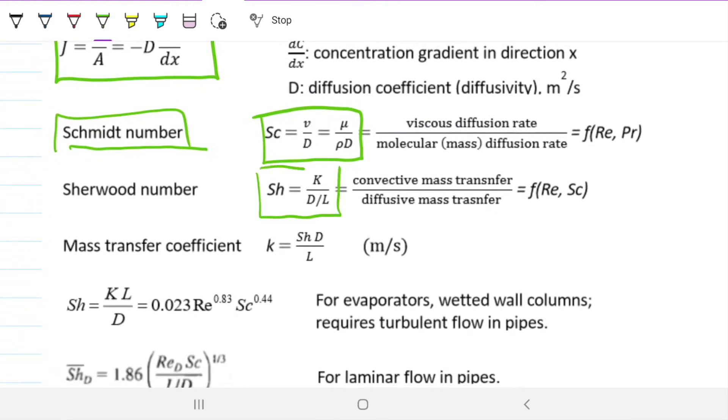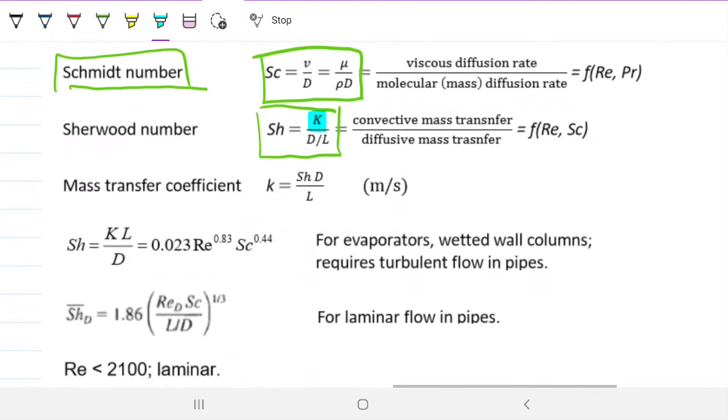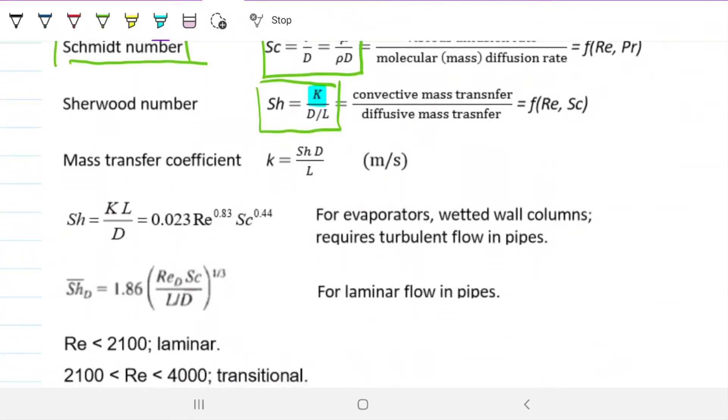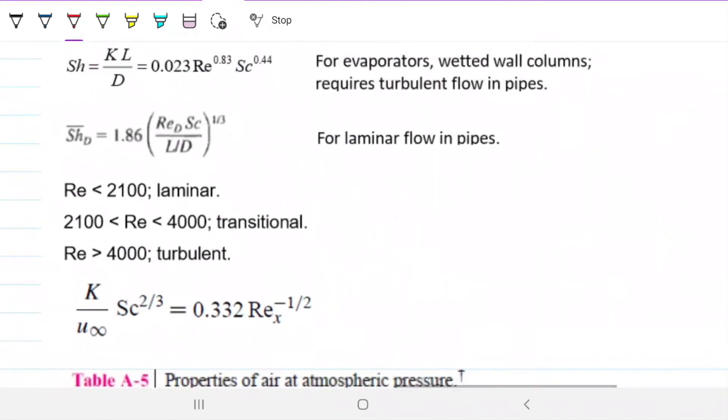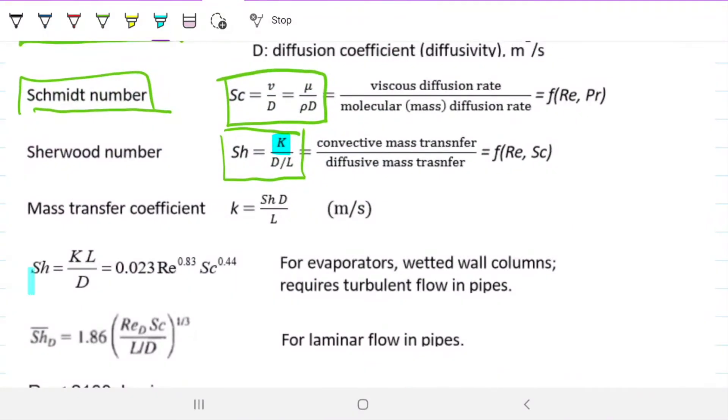Sherwood's number is given here. So that's where the K shows up. Here is the K we're looking for. And mass transfer. So this is the equation we're going to be using to find K. And there's a relationship. There are two relationships here for Sherwood. One for laminar flowing pipes, which is not our case, and one for evaporated wet walls.